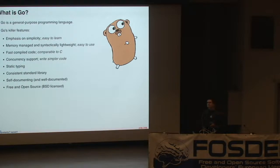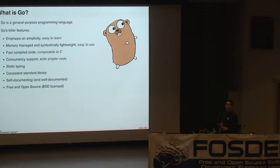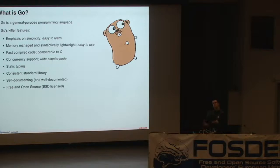It's a memory-managed and syntactically lightweight language. Like a dynamic language such as Python or JavaScript, it has that easy, loose feeling where you don't have to worry about memory deallocation. It compiles to native machine code — Intel x86, 32-bit and 64-bit, and ARM code generation. In practice, its speed is comparable to C.